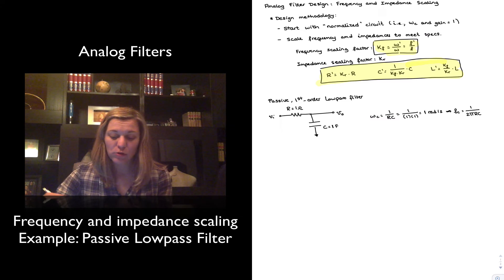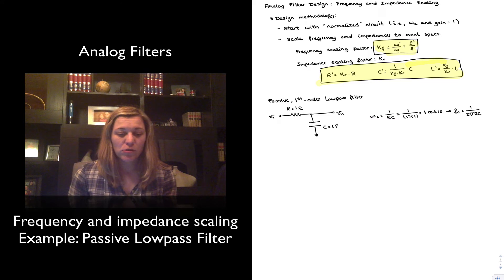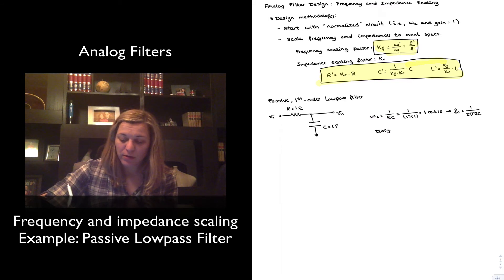The gain is also one, obviously, because it's a passive filter. So no gain different than one or greater than one is possible anyway. And so we're going to go ahead and redesign this circuit, or start with this normalized circuit. And from this, design a passive first order low pass filter with a cutoff frequency of one kilohertz.